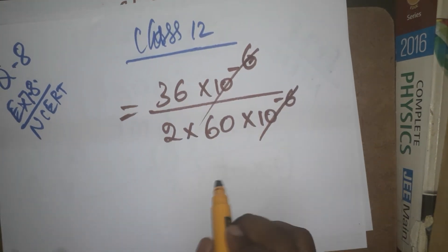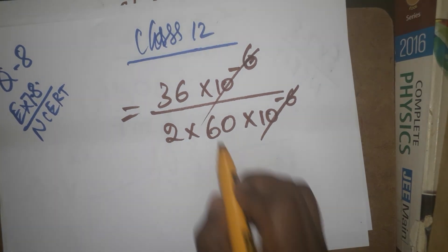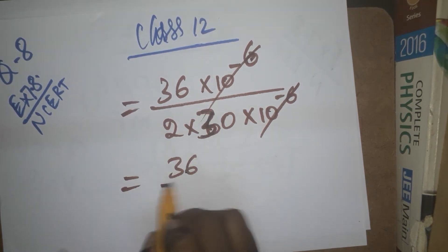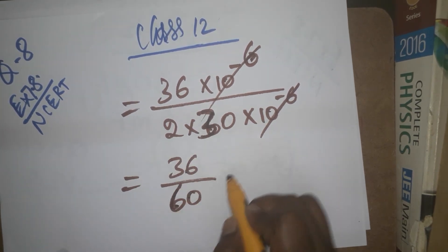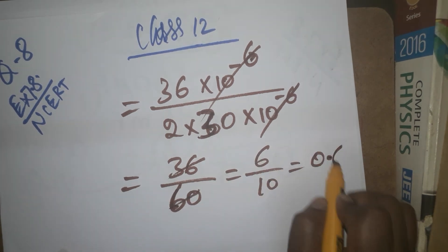We get 36/60, which simplifies to 6/10 = 0.6. So the energy stored is 0.6 joules.